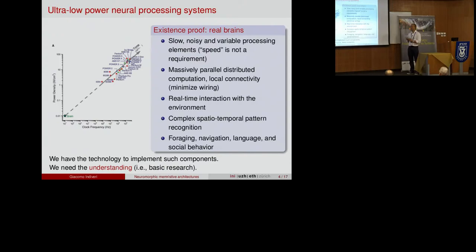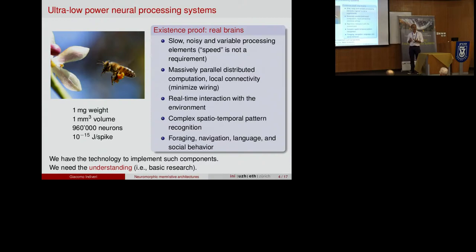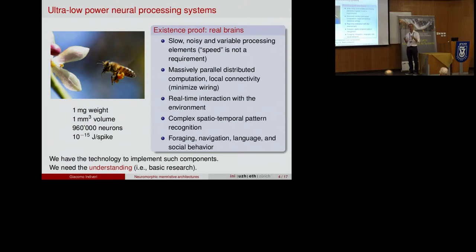Both neuromorphic approaches address the problem of designing computing systems that are very low power. If you look at the brain, it is a very nice example. This slide from IBM shows that power density in brains is orders of magnitude away from conventional technologies. Even in biology there are existing proofs — a bee has a brain that is one milligram, one millimeter cubed in volume, less than a million neurons, very low power. With this technology, bees compute with variable and unreliable processing elements which are extremely slow.